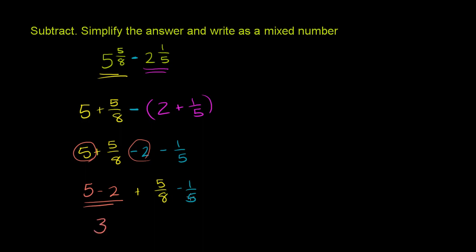But what's 5 eighths minus 1 fifth? So we have 5 eighths minus 1 fifth. Now just like when you're adding fractions, when you're subtracting fractions, you have to have a common denominator. 8 and 5 are not the same denominator, so we have to find the least common multiple of these two numbers.